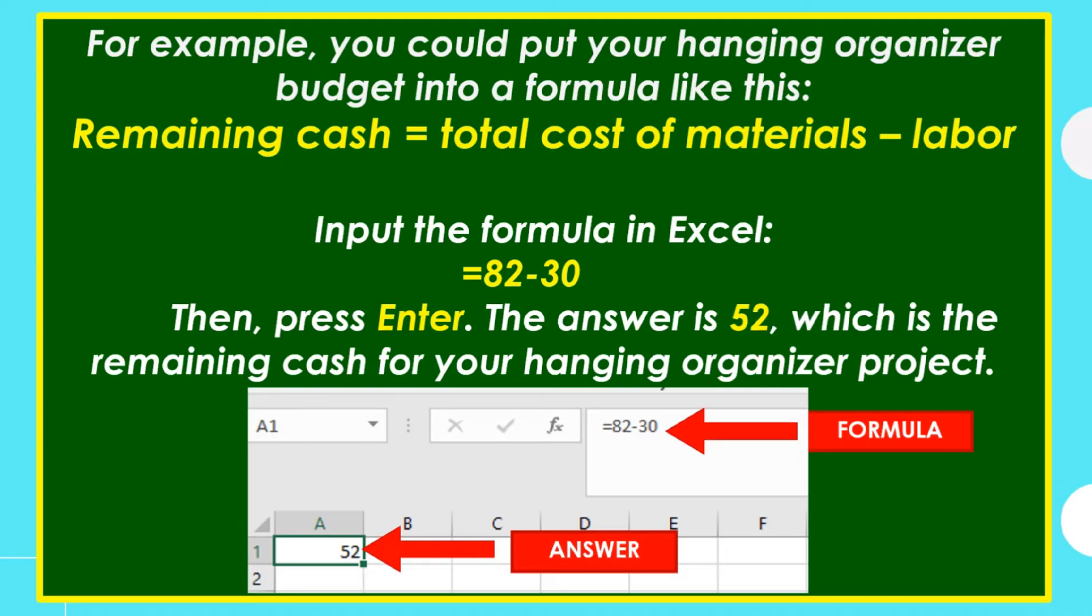Input the formula in Excel, equal sign 82 minus 30. Then, press Enter. The answer is 52, which is the remaining cash for your hanging organizer project. In the illustration, look at the formula, equal sign 82 minus 30, and then the answer as shown in the picture.